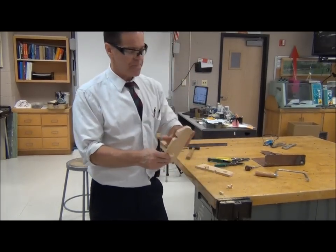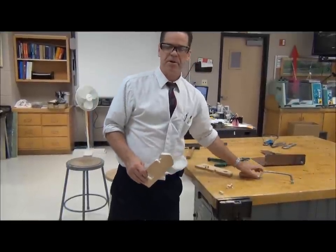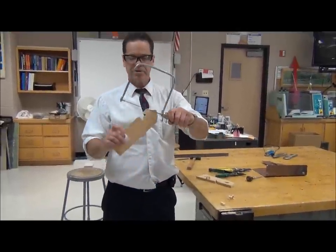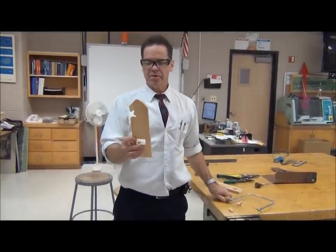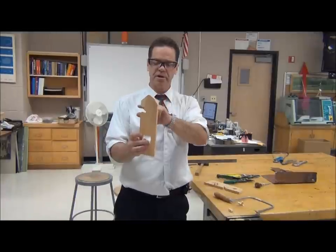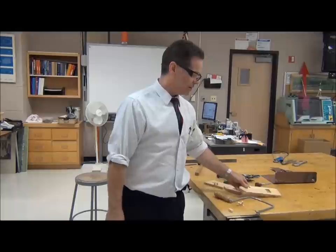So we've shown coping saw has this narrow blade with the teeth on it. It allows you to make curve cuts right here. Nice and thin and small. So we got straight cut here, curve cut here, really curvy cut here, as well as the inside cut inside here.